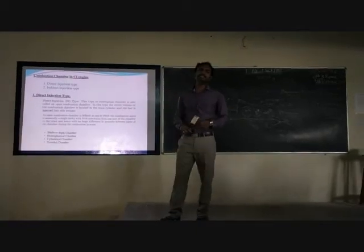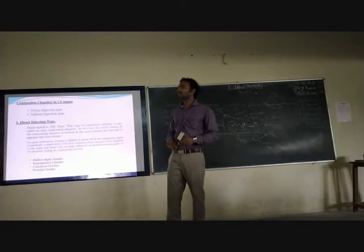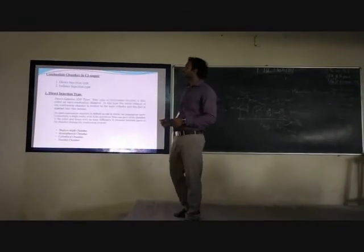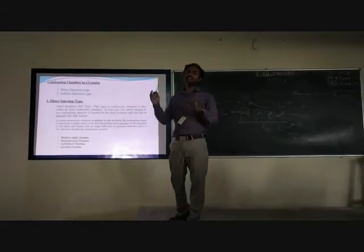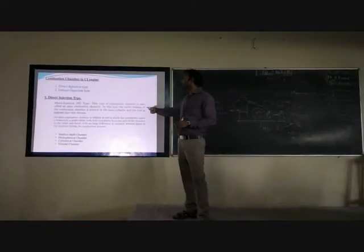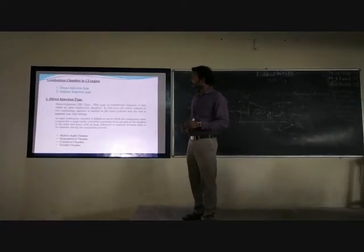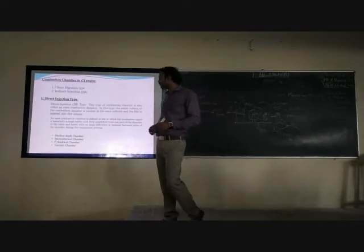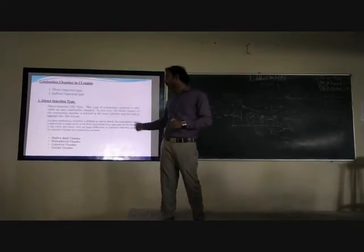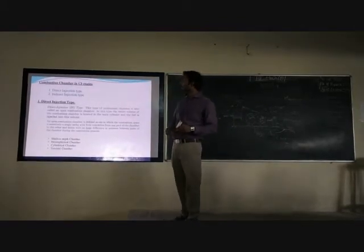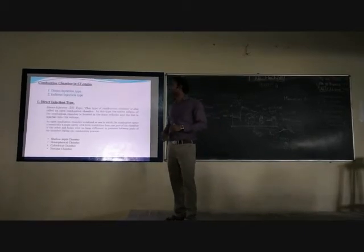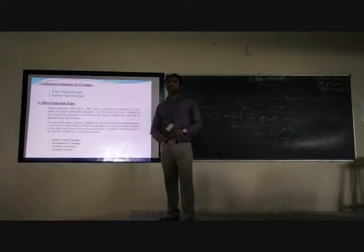Now we will discuss combustion chamber types for CI engines. The combustion chamber is divided into different types: direct injection type, where the combustion volume is in a single space — here the entire volume of the combustion chamber is located in the main cylinder. Direct injection chambers can be further classified as shallow chamber, toroidal chamber, and hemispherical chamber, which generate low, medium, and high swirl respectively.